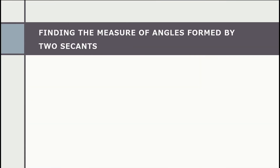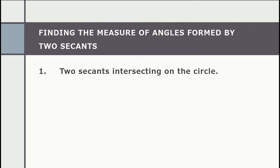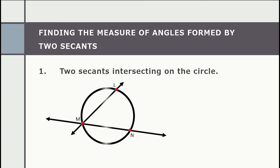Now let's find out how to determine the measure of angles formed by two secants. Number one: two secants intersecting on the circle. This is basically an inscribed angle, so our formula is half the measure of its intercepted arc. In the given example, the intercepted arc is arc LN, so we take half of its measure.